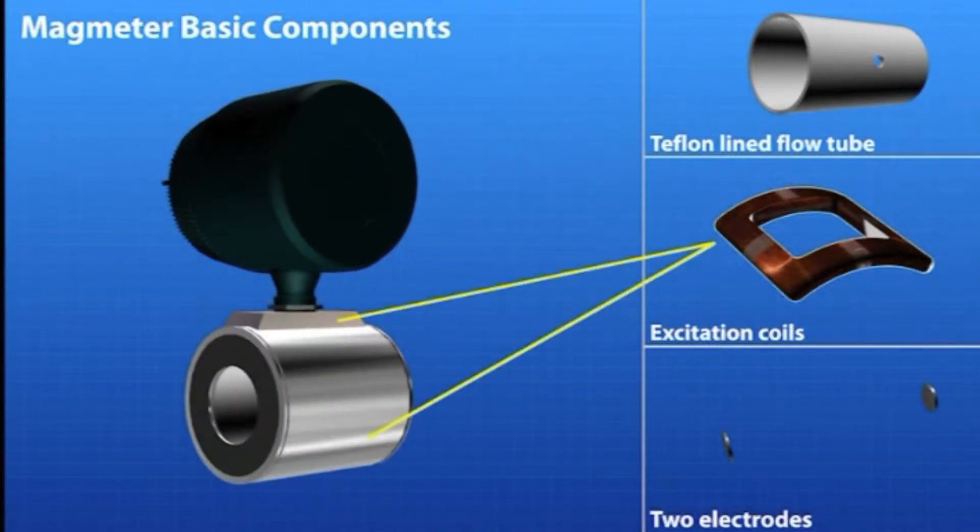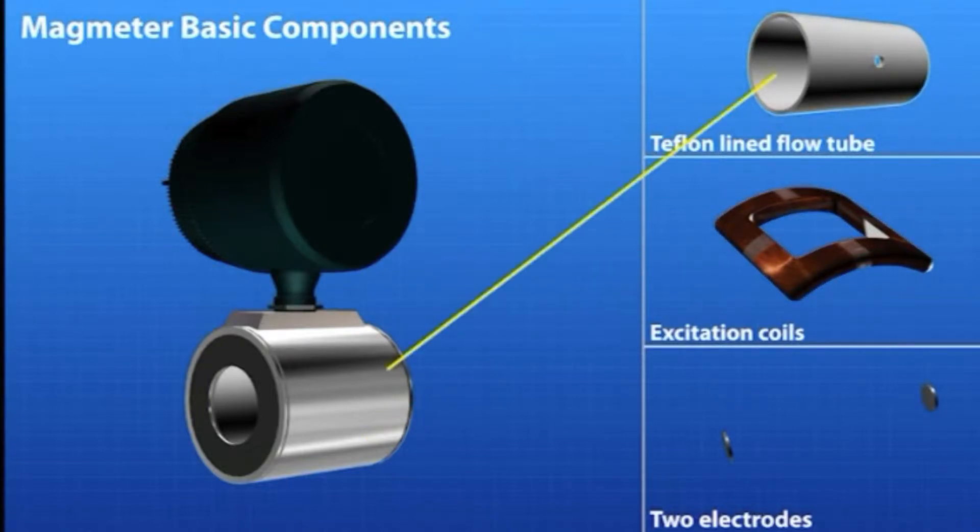Current is applied to the coils in the magmeter to generate a magnetic field within the flow tube. As a conductive fluid flows through the meter, an electromotive force is generated. This force is detected by the electrodes and the resulting value is converted to flow rate.